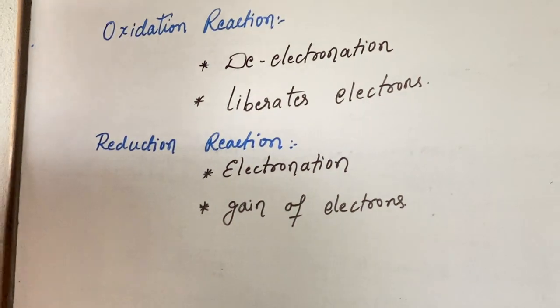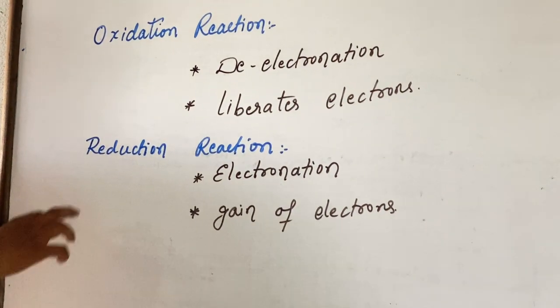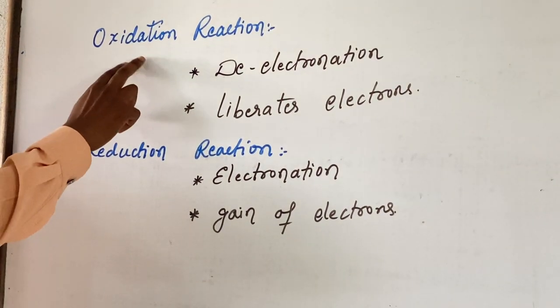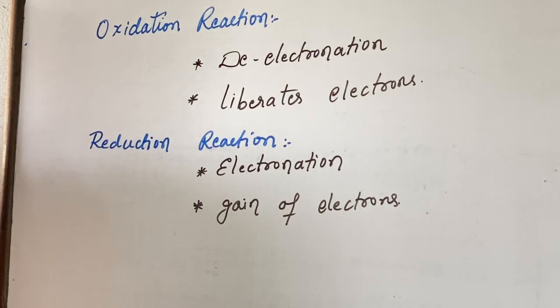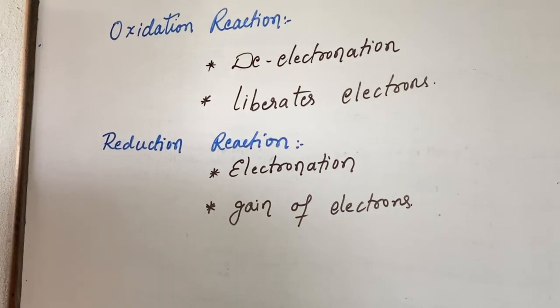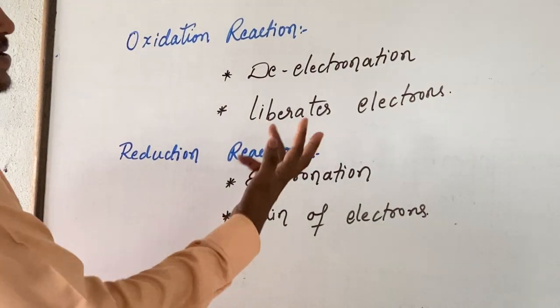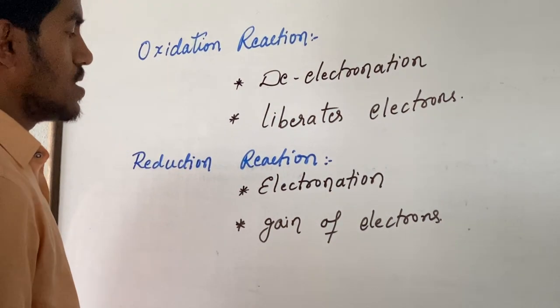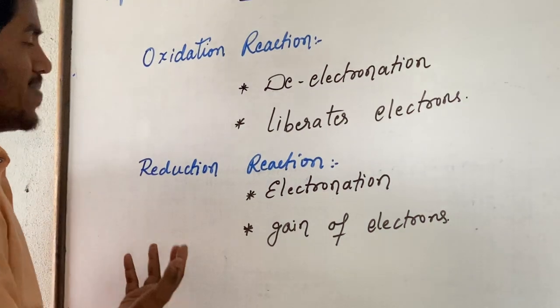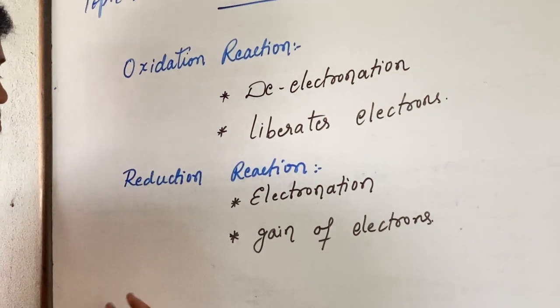Generally, metals can undergo oxidation by losing electrons. Non-metals can undergo reduction by gaining electrons.